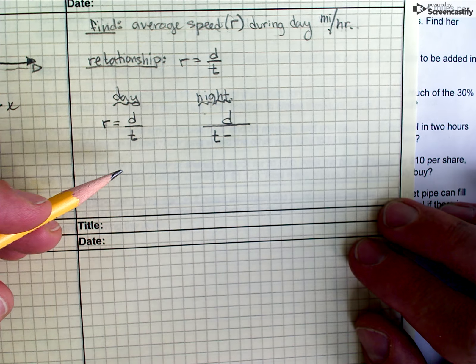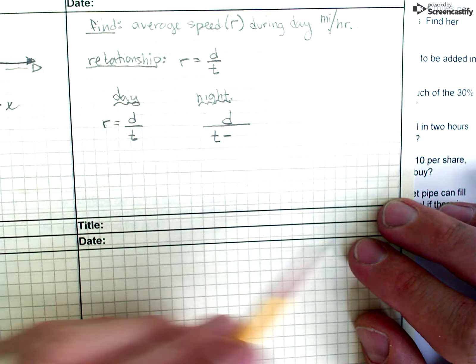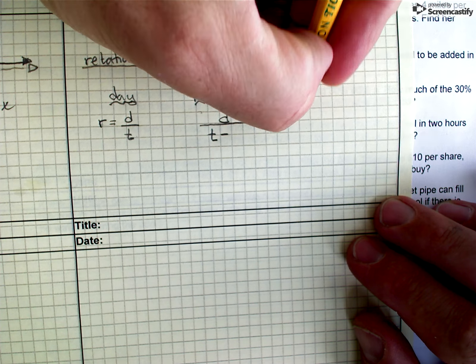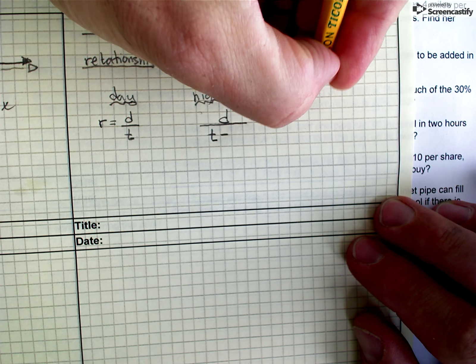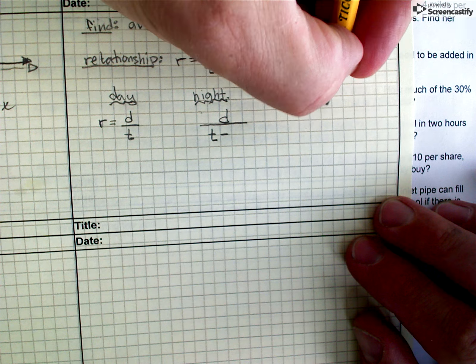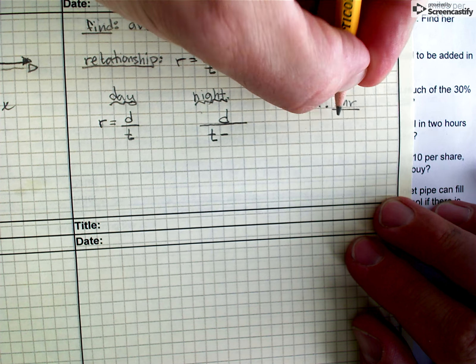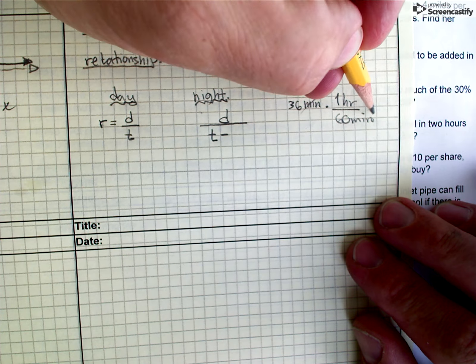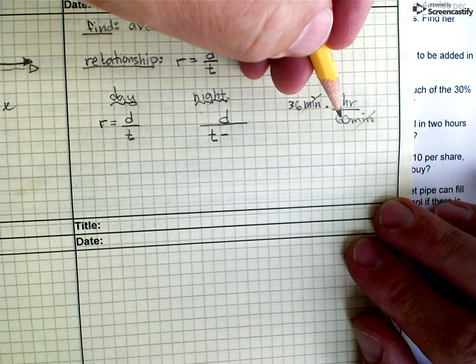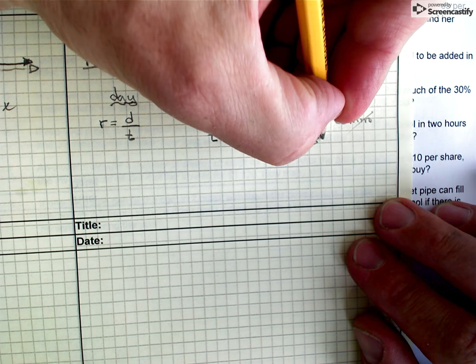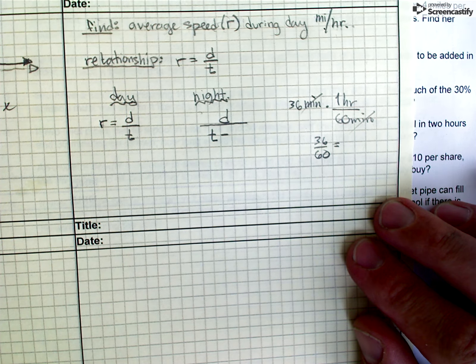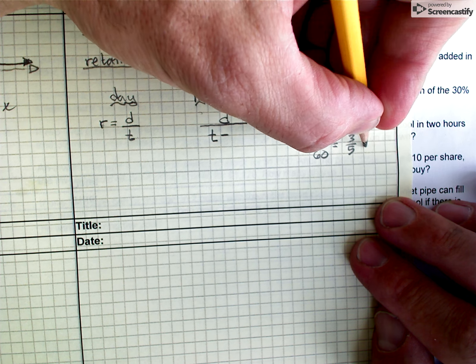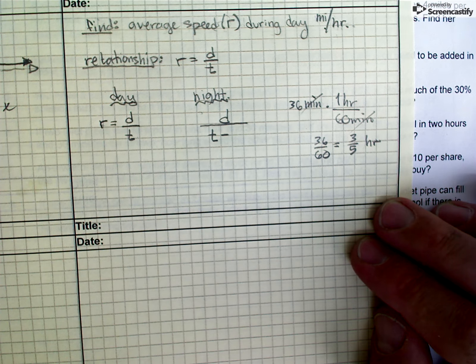The problem there is that I've already chosen to do my problem in miles per hour. So all of my times have got to be in hours. So I'm going to take that 36 minutes and just do a little conversion problem. I know that one hour is 60 minutes, so I set up that ratio. And I can cancel out the minutes. And when I do the math here, I'm left with 36 60ths of an hour. And I can reduce that by 12, and it's just down to 3 fifths. And so it's 3 fifths of an hour.